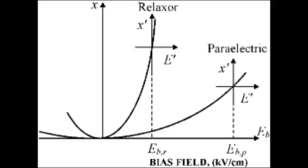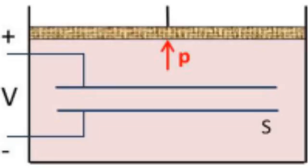Il faut distinguer l'électrostriction de l'effet piézoélectrique inverse. La première est un effet du second ordre, proportionnelle au carré du champ électrique. Ainsi, des champs électriques opposés donnent une déformation identique.